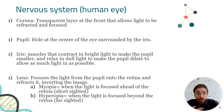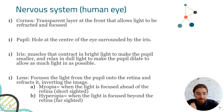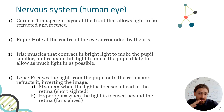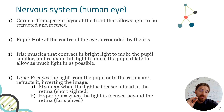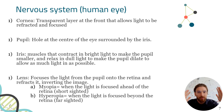It starts with the cornea — a transparent layer over the front of the eye that allows light through and also refracts it, meaning it changes the direction of light. After that, the light enters the pupil, the dark spot in the middle of your eye. The size of the pupil is controlled by the iris, which is the colorful part of our eye.